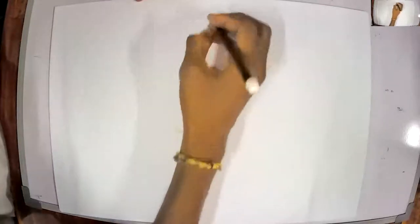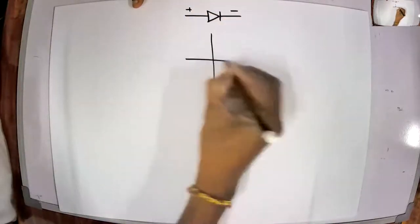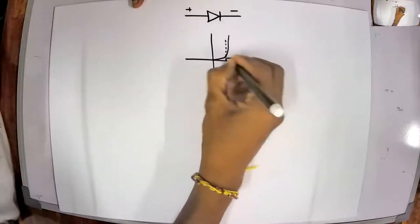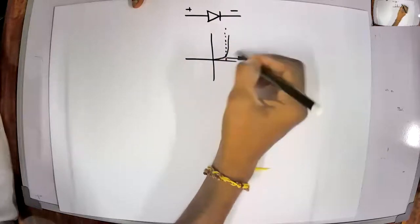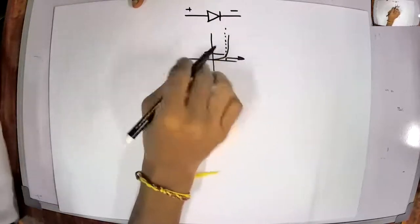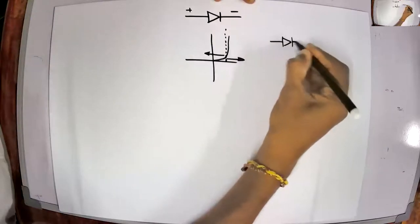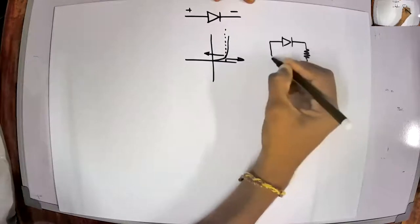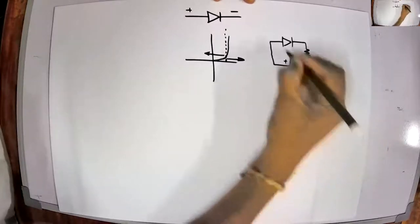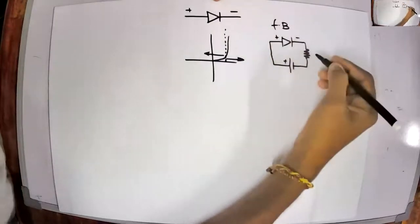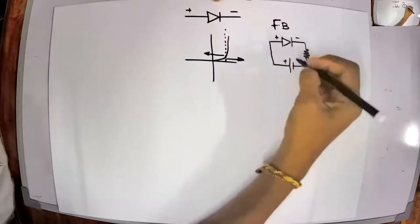Briefly, let me draw the IV characteristic of a p-n junction. This is the circuit symbol of a diode — plus and minus. If I draw the IV curve, it looks something like this. Above the knee voltage there will be a huge current flow, and below it the diode will not conduct electricity. If you connect a diode through a resistance to a battery, with plus to plus and minus to minus, this diode is connected under forward bias.